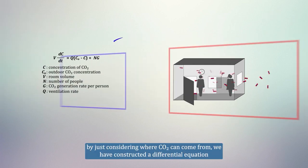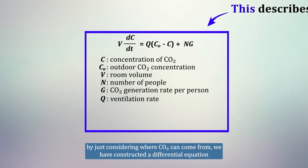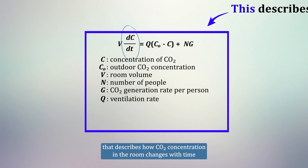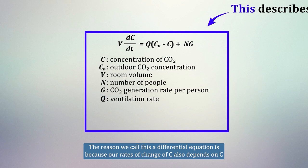So let's recap. By just considering where CO2 can come from, we have constructed a differential equation that describes how the CO2 concentration in the room changes with time. This depends on the room volume, the ventilation rate, the outdoor CO2 concentration, the number of people in the room, and the CO2 generation rate per person. The reason we call this a differential equation is because our rate of change of C also depends on C.